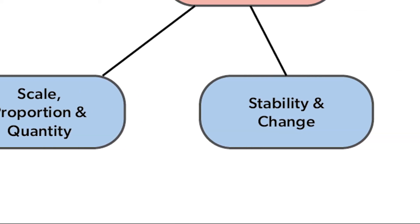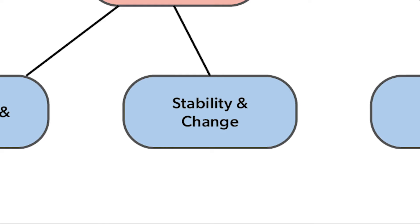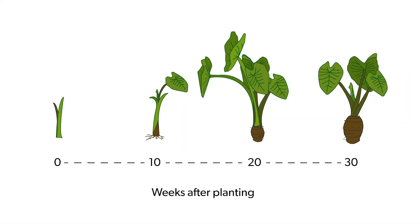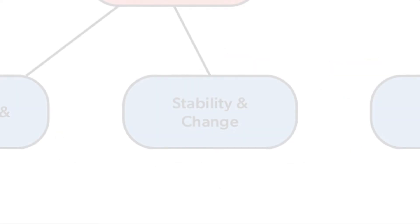Systems can be in a state of stability or change. Scientists look for patterns of change in systems. They want to understand what causes change. Over its life cycle, Kahlo changes in a predictable pattern. Scientists use stability and change to describe patterns.